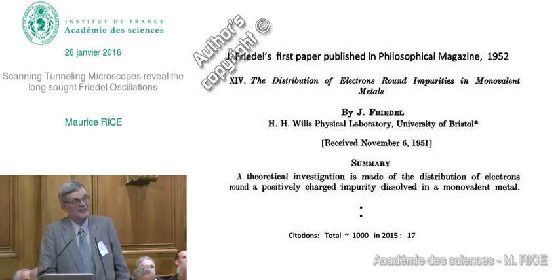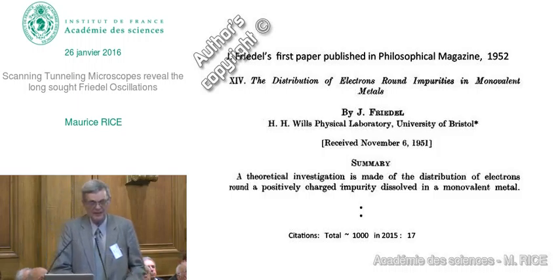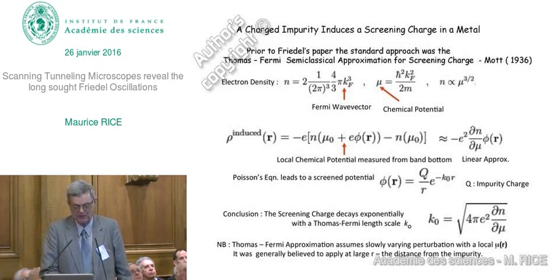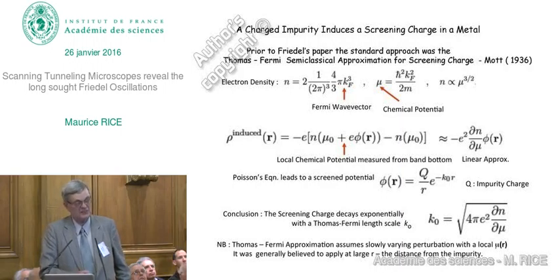The problem that Jacques Friedel looked at was simple in the sense that he chose a monovalent metal, like sodium or potassium, where the wave functions are essentially plane-wave-like, and he put in a positively charged impurity. That problem was not new in 1951 — it had been around and discussed for quite a while. The accepted state at that time was: since the electrons in a metal are mobile, when we have a positive charge, the electrons will move to screen it completely. Prior to Friedel's paper, the standard approach was to use the Thomas-Fermi semi-classical approach, used for example by Mott in a paper in 1936.